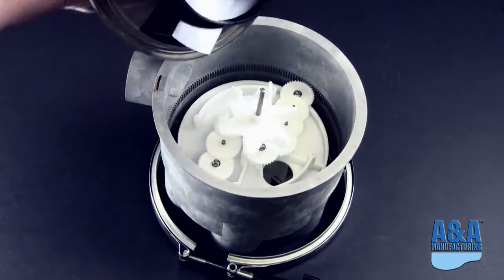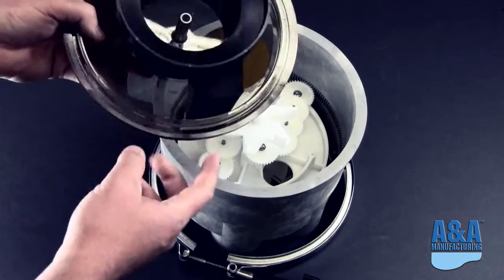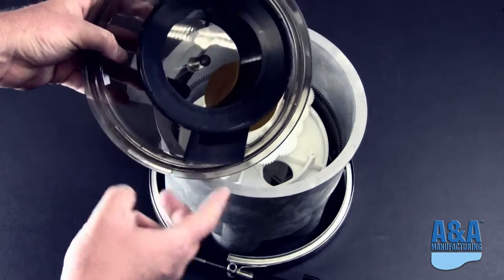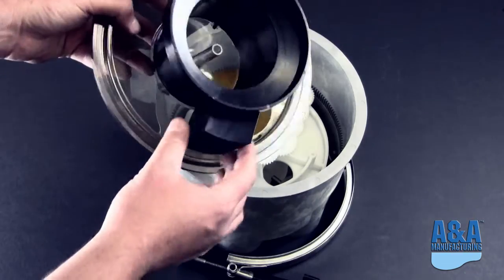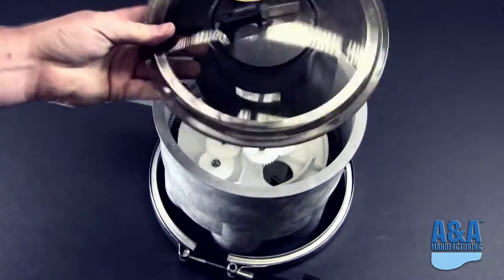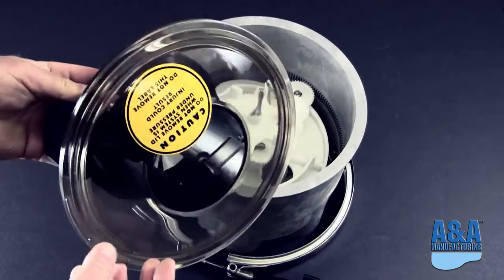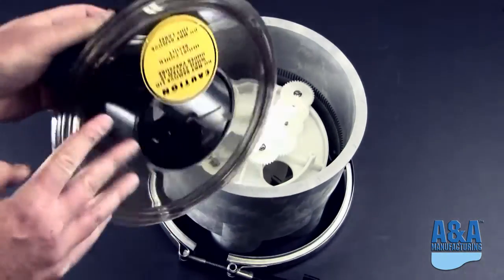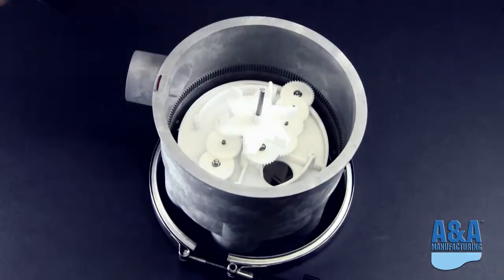As we take this off, you can see that there's an internal baffled system here. The inlet piece right here would line up with your inlet of your pipe when you're reassembling it. We are going to have another video that will show how to adjust the speed of the valve using this lid.